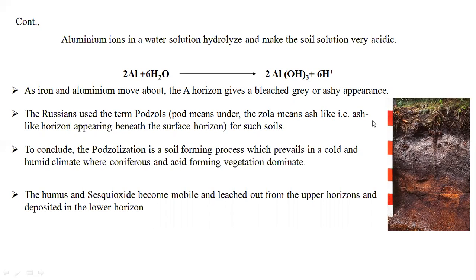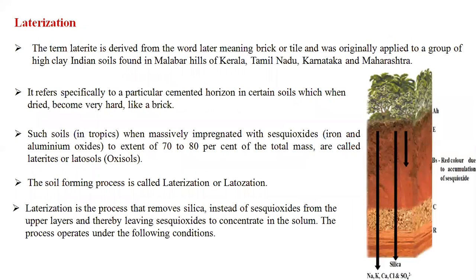The term 'podzol' is a Russian word meaning ash-like. To summarize, podzolization is a soil-forming process that prevails in cold and humid climates where coniferous, acid-forming vegetation dominates. Humus and sesquioxides become mobile and are leached from the upper horizons and deposited in the lower horizons.